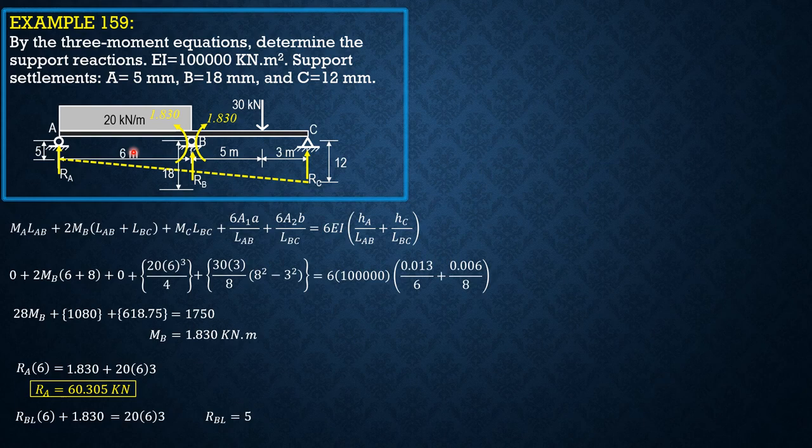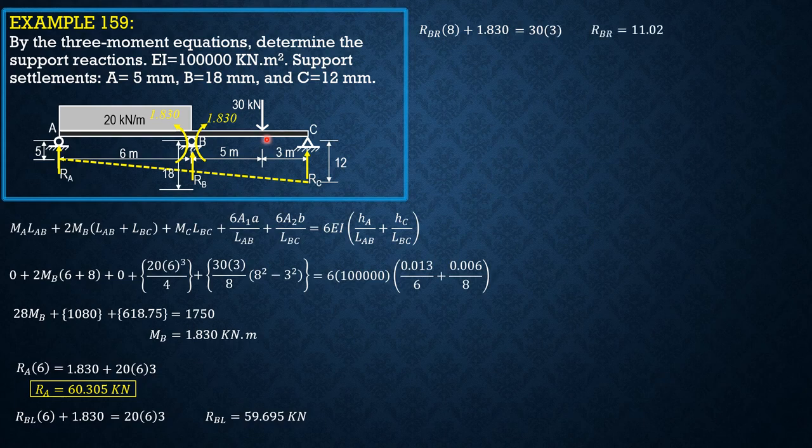So RB left is 59.695 kN. Considering BC, RB right is upward, so summation of moments about C equals 0: RB right × 8 + 1.83 = 30 × 5.